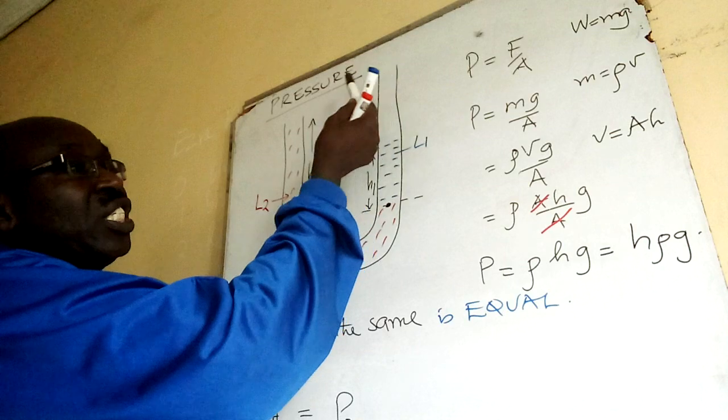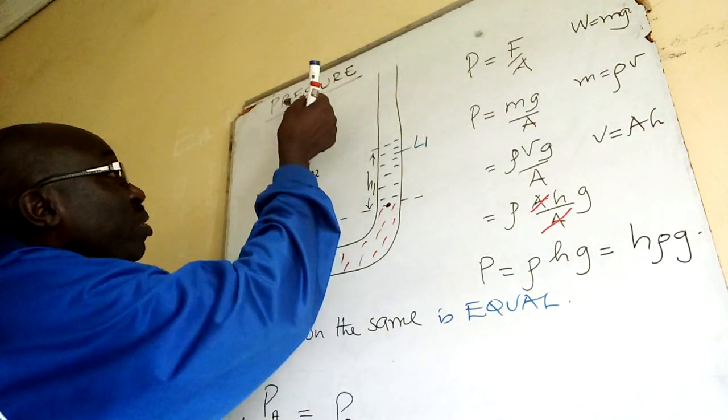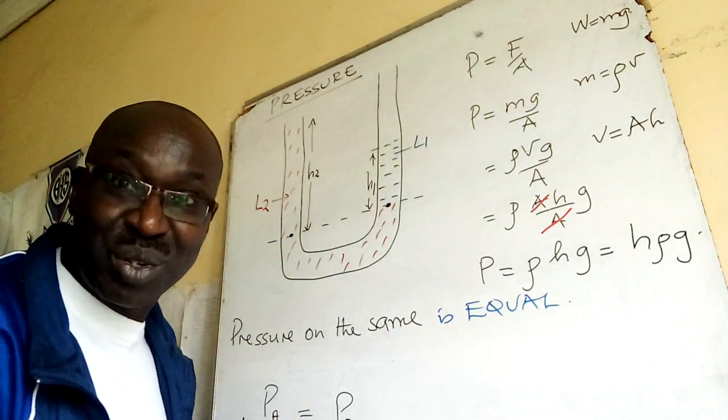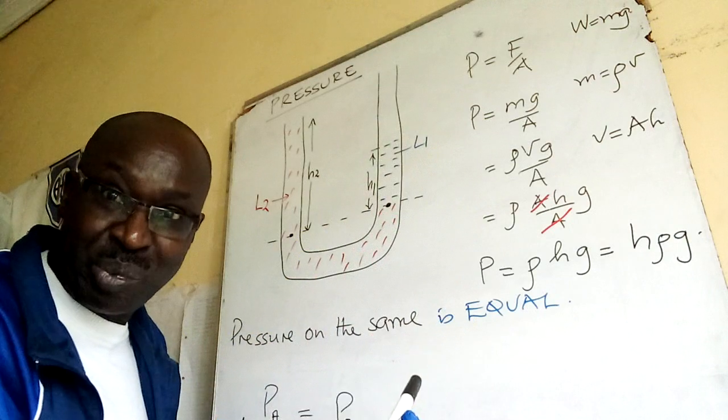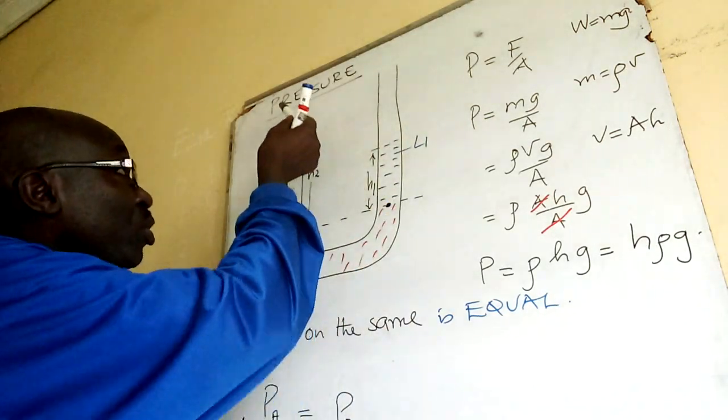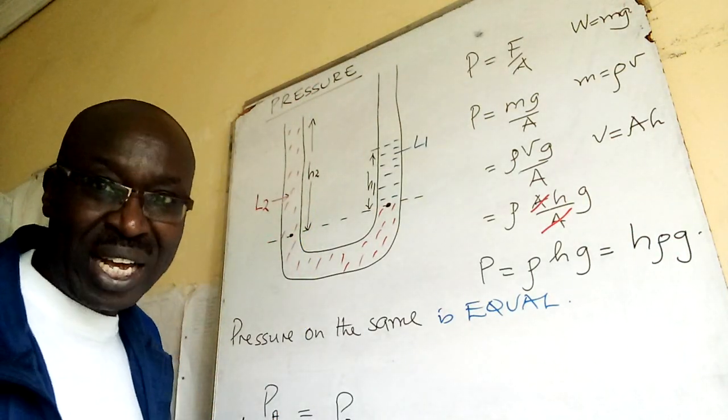Since these tubes are open, atmospheric pressure cancels atmospheric pressure. Because on both sides we would have atmospheric pressure pressing upon liquid blue, and here atmospheric pressure pressing upon liquid red, L2.